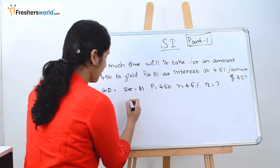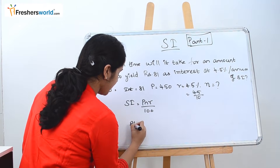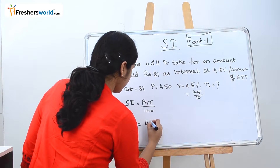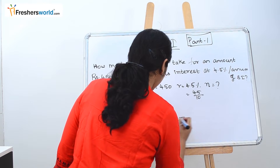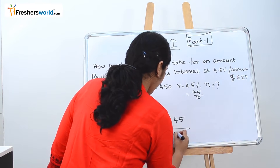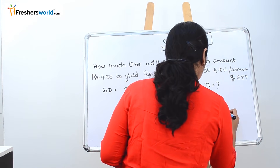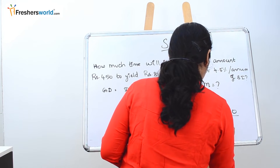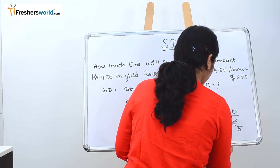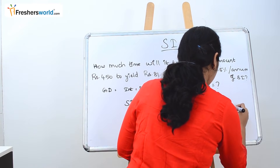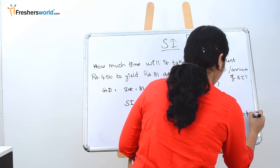The question asks us to find the number of years N. Using the formula Simple Interest equals PNR divided by 100: 81 equals 450 times N times 4.5 divided by 100. Writing 4.5 as 45 by 10, the rate becomes 45 by 1000. Taking everything to one side, N equals 81 times 1000 divided by 450 times 45, which gives 4 years.